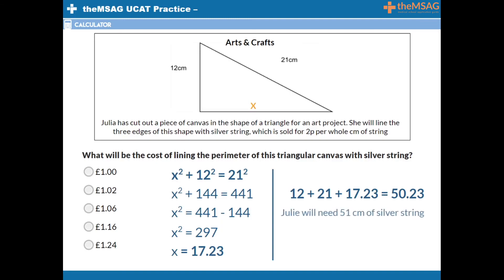Julia will need to purchase 51 centimetres of silver string. 51 times 2p gives 102p, or £1.02. Therefore, option B is the correct answer.